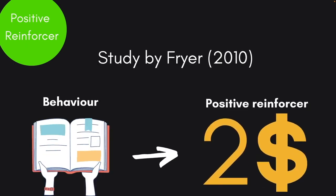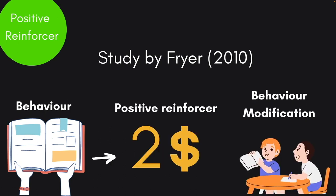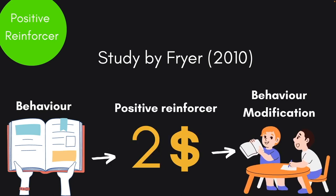Fryer in 2010 found evidence for this. This study showed that when second grade students in Dallas were paid $2 each time they read a book and passed a short quiz about the book, the reading comprehension of these second graders increased significantly.